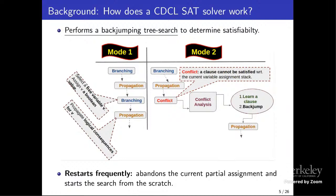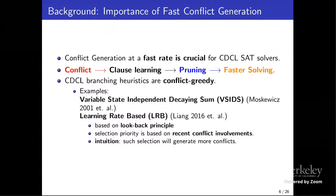A learned clause prunes the search space for the solver in the future. Once a clause is learned, a backjumping level is computed from that learned clause and the solver performs propagation from that learned clause without making a further decision. During execution, the solver also performs many restarts, where it abandons the current partial assignment and the search starts from scratch. Conflict generation at a fast rate is very crucial because without conflict we cannot learn a clause, and without learning we cannot prune the search space.